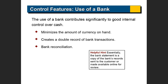The next internal control feature that almost all companies use is having a bank account and preparing a bank reconciliation. Every time you deposit money into the bank and record it in your company books, the bank also records the deposit. Anytime you take money out, the bank also records it. So you have two sets of records: one maintained by the bank and one maintained by the company.